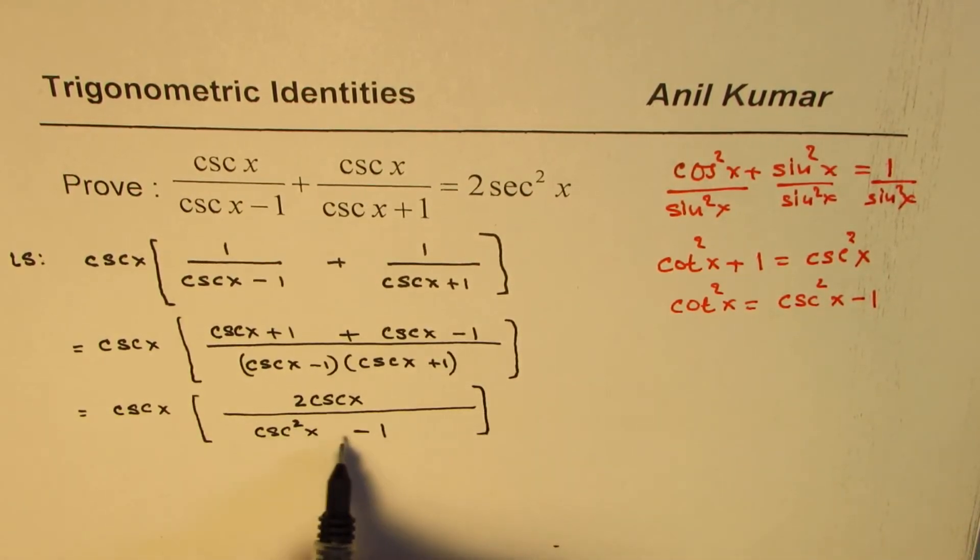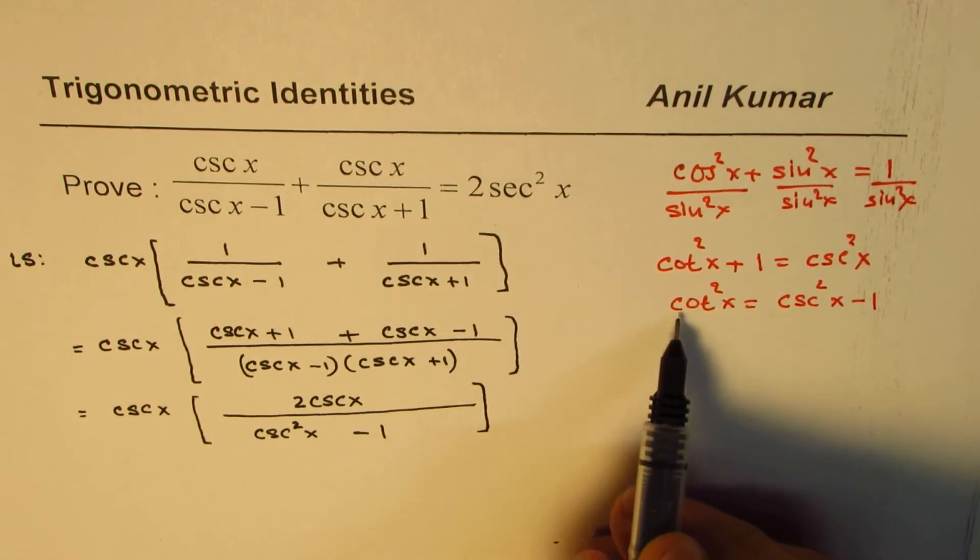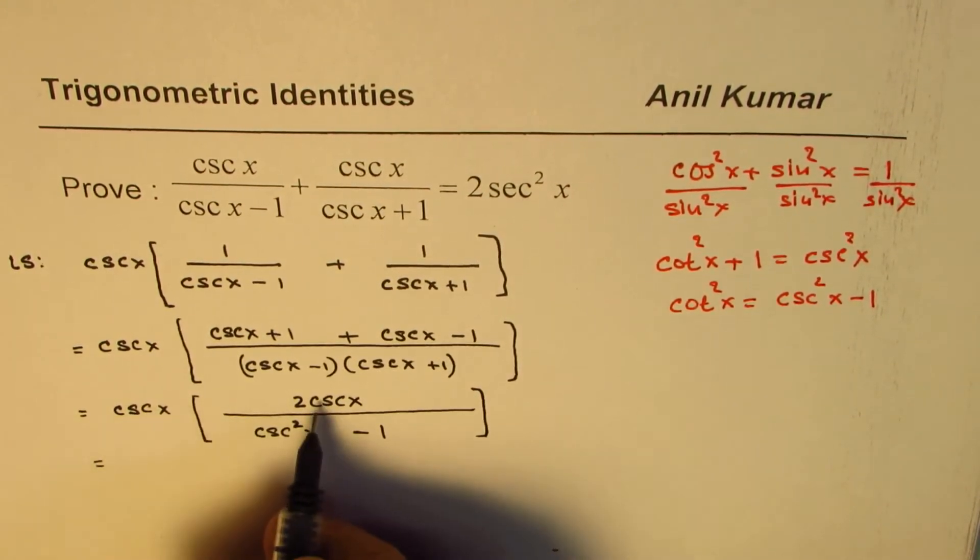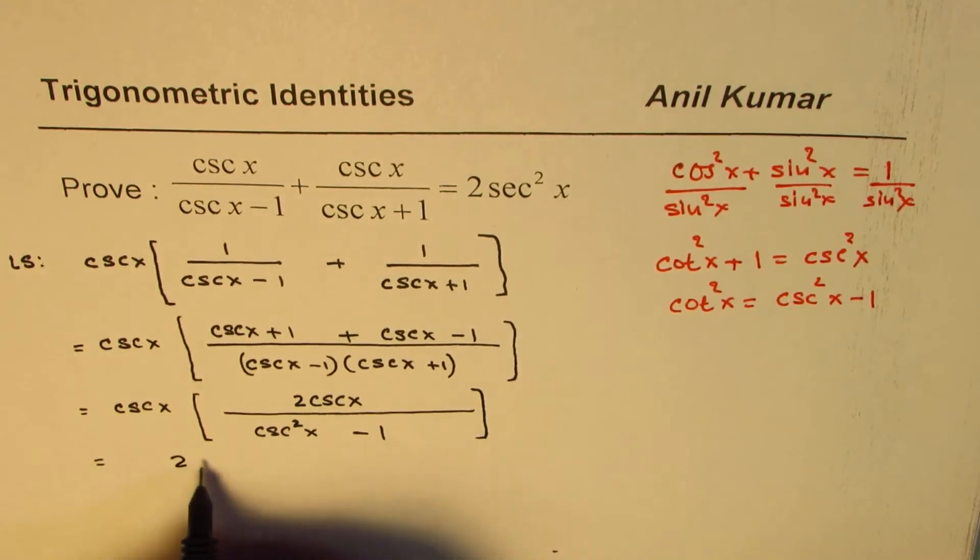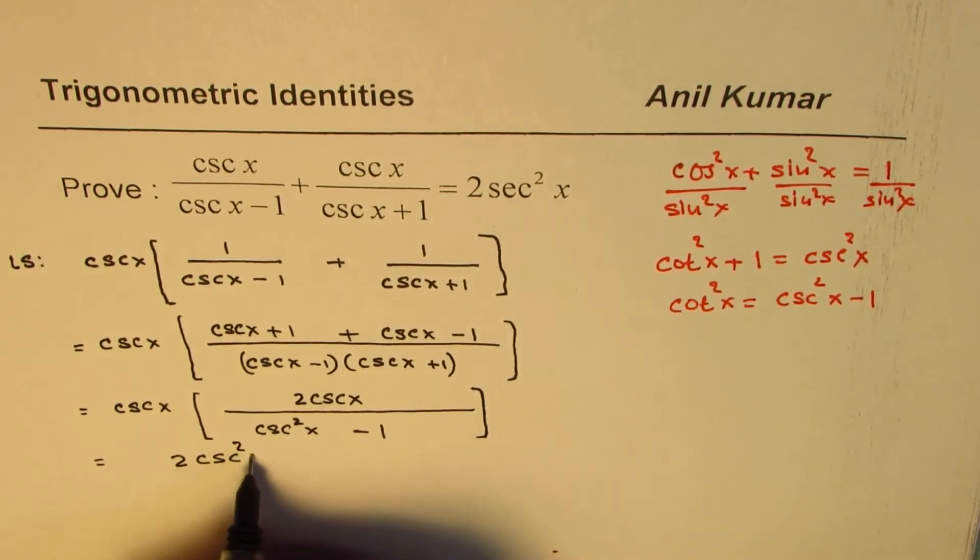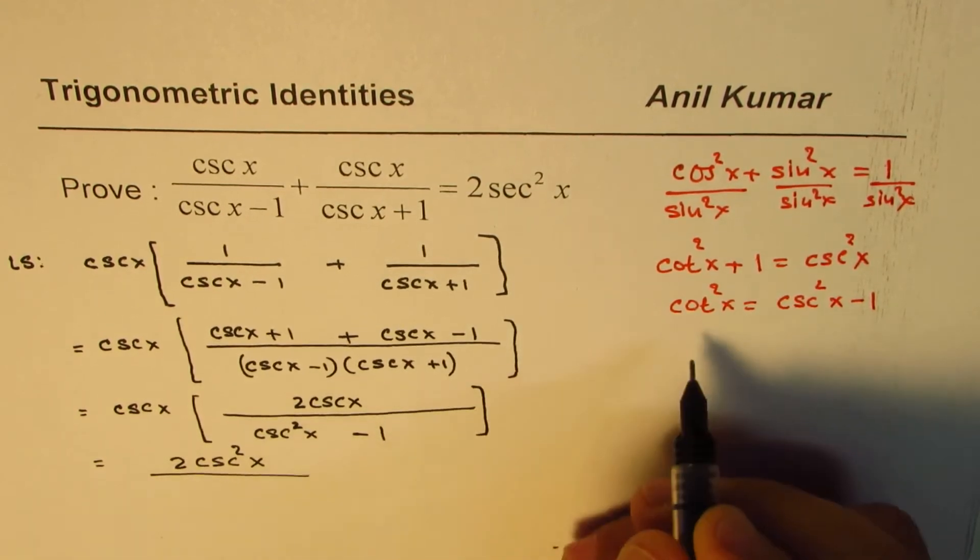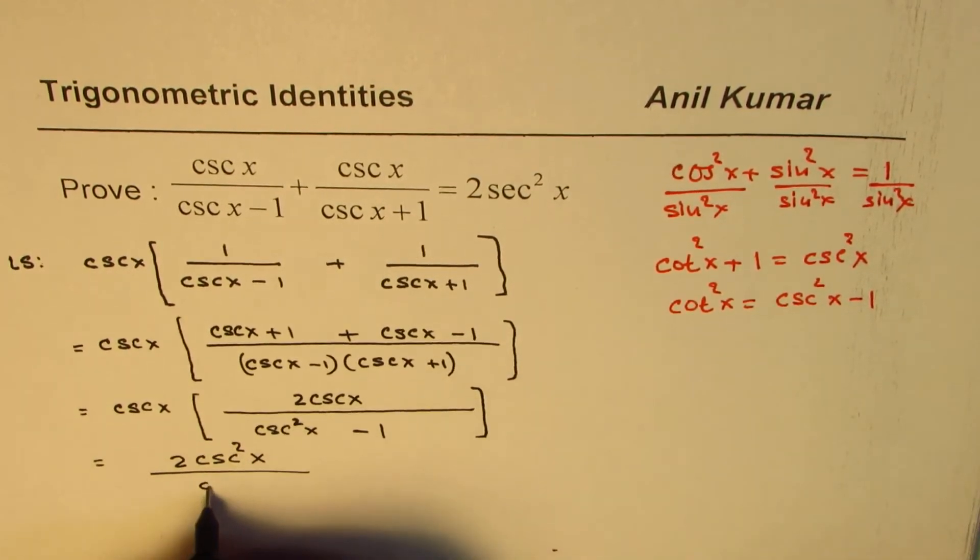Instead of the denominator of cosecant square x minus 1, we'll write this as cot square x. So, what we get here is, numerators when you multiply, we get 2 cosecant square x and the denominator cosecant square x minus 1, I'm writing as cot square x.